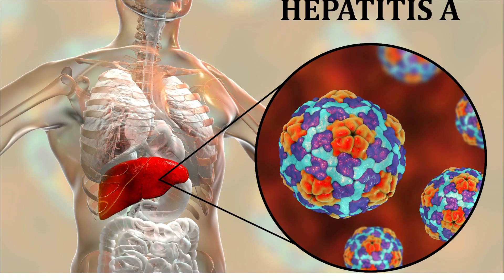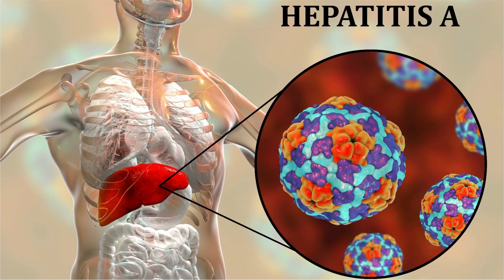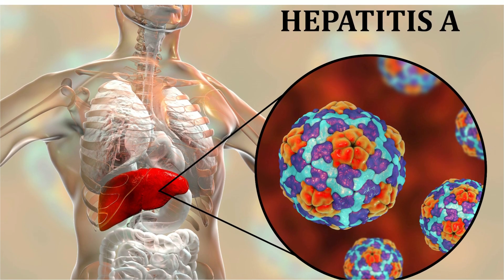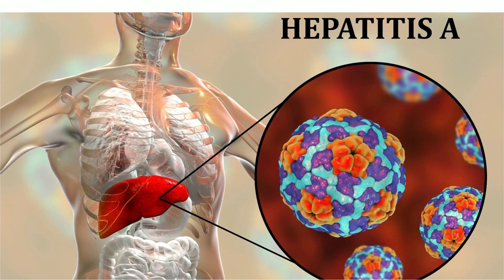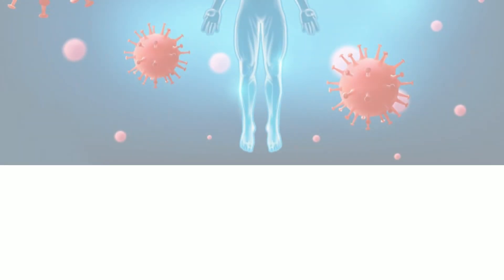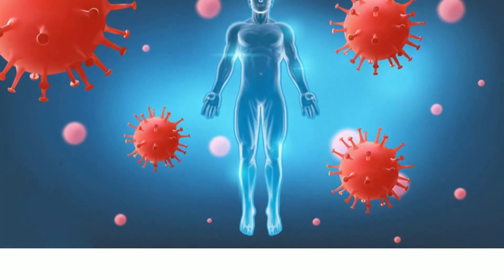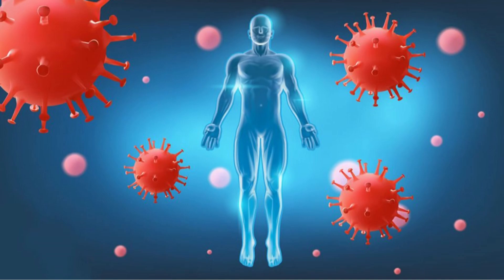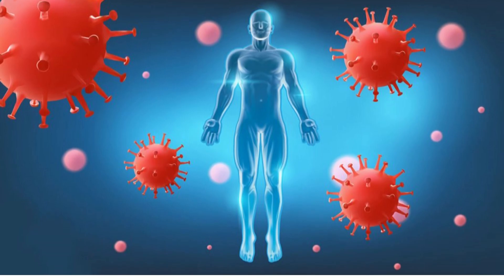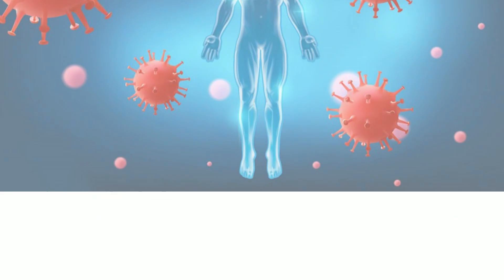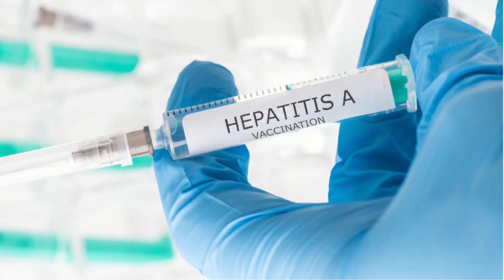What about hepatitis A? Anyone can become infected with the hepatitis A virus through food, beverages, or items that have been in contact with the excrement of an infected person. Even though the symptoms may linger for several weeks, most people fully recover. Lifelong immunity against hepatitis A is provided by infection, however this does not confer immunity against other hepatitis types. A vaccine is available to protect against hepatitis A.